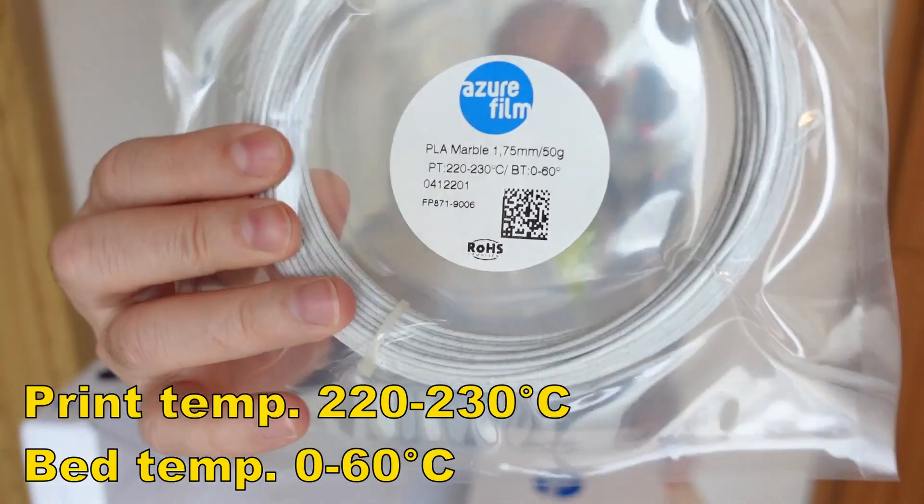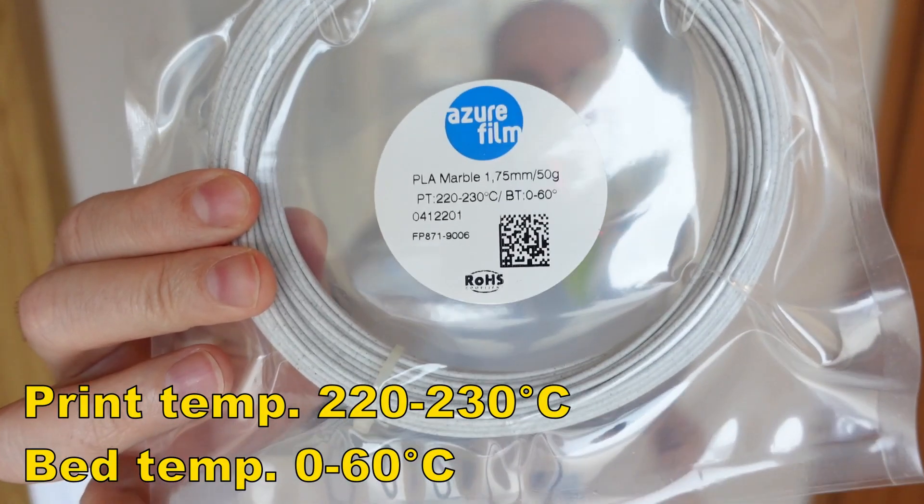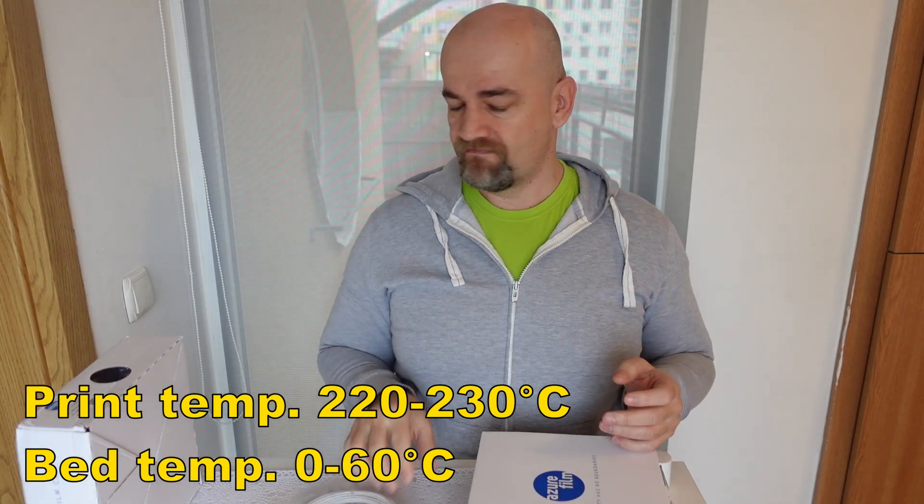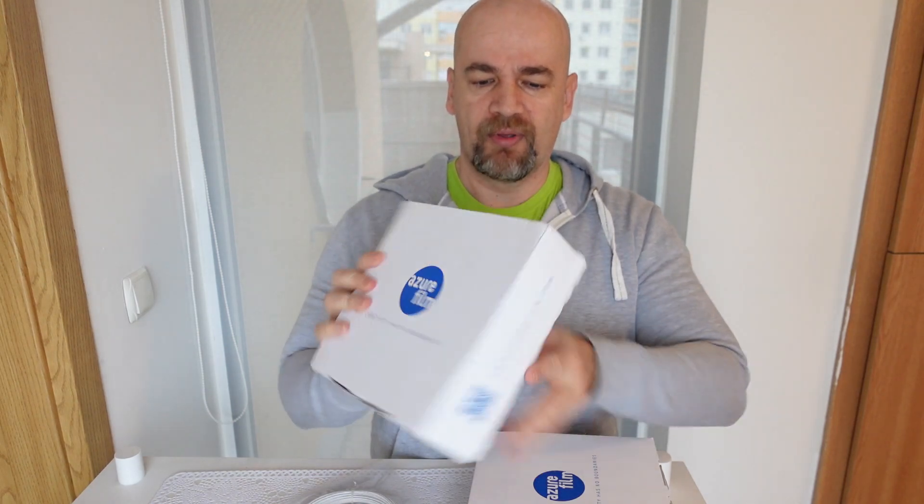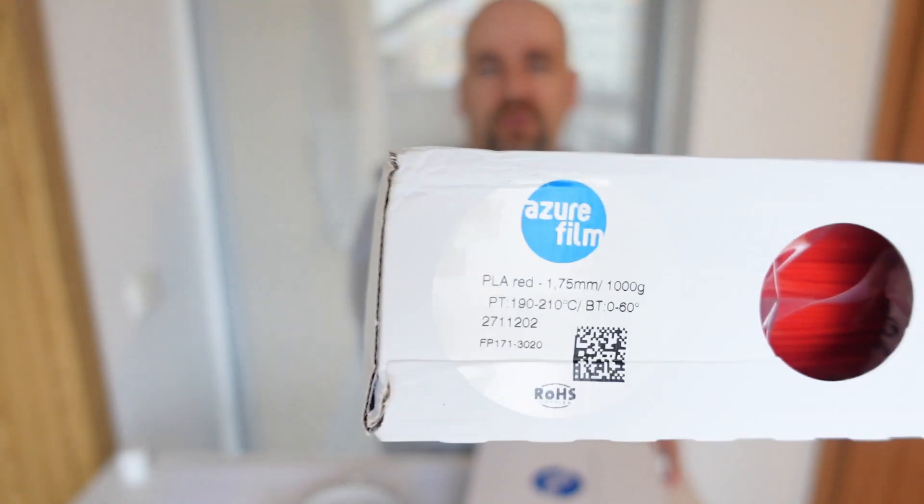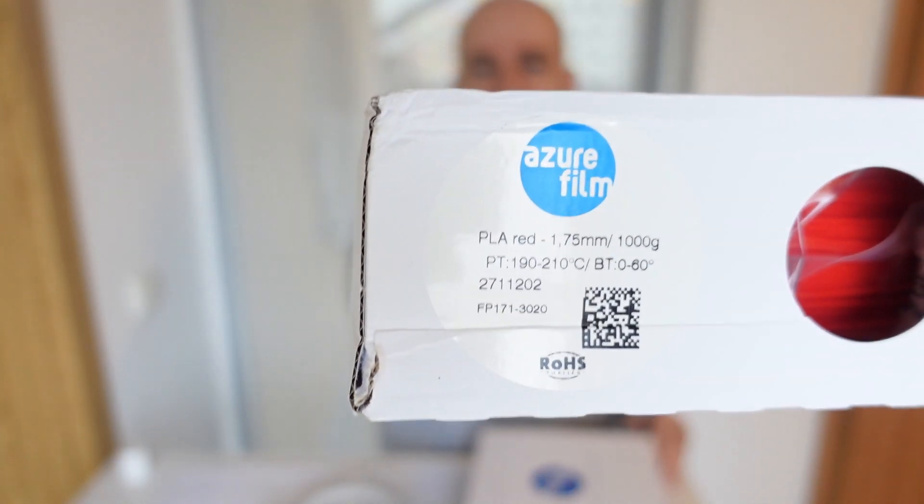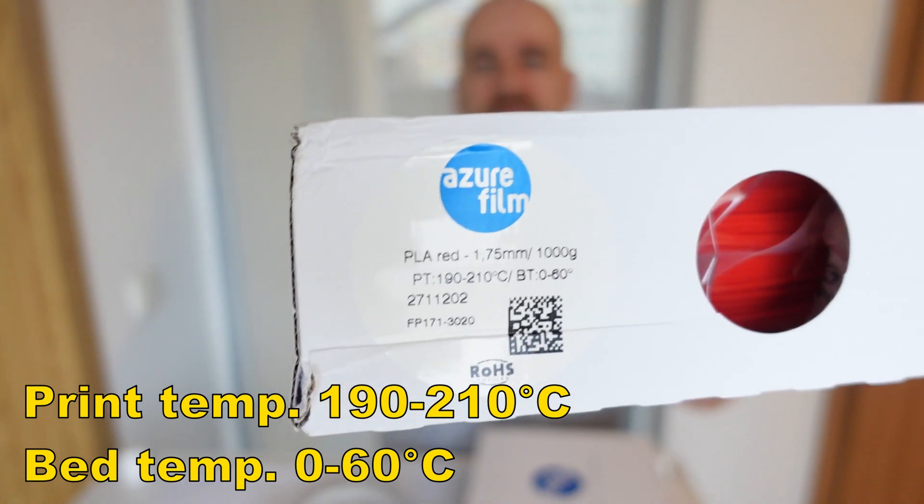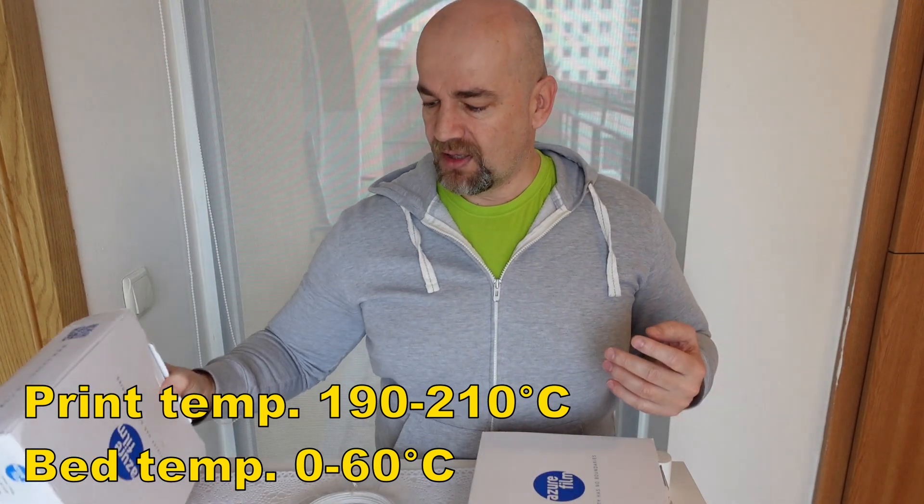On marble PLA, printing settings are the same, only recommended bed temperature is 60 degrees Celsius as usual for PLA. Just for comparison, from Azurfilm I have the regular PLA, and here we have those used temperatures between 190 and 210 degrees Celsius and 60 degrees recommended bed temperature.